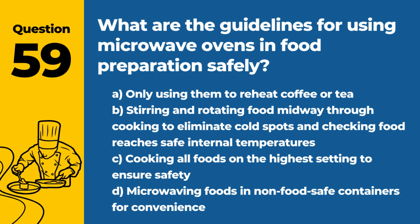Question 59. What are the guidelines for using microwave ovens in food preparation safely? The answer is B: Stirring and rotating food midway through cooking to eliminate cold spots and checking food reaches safe internal temperatures. Proper techniques ensure food cooked in microwaves is safe to eat.